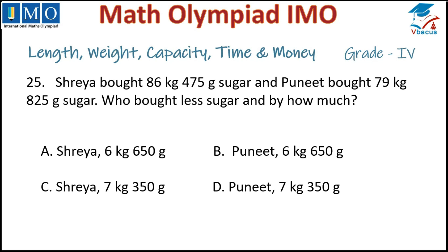Question 25: Shea bought 86 kg 470 grams of sugar and Puneet bought 79 kg 825 grams of sugar. Who bought less sugar and by how much? It is obvious — 79 is less than 86, so Puneet bought less sugar. We subtract: 86.470 minus 79.825. 0, 7 minus 2 is 5,